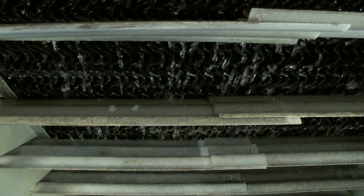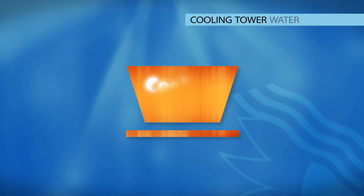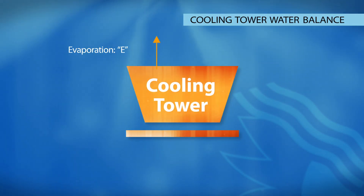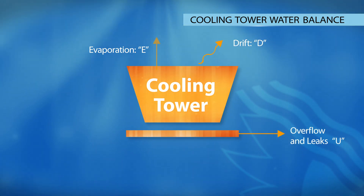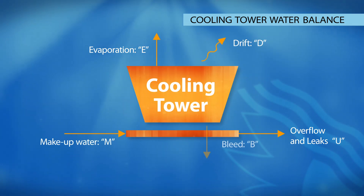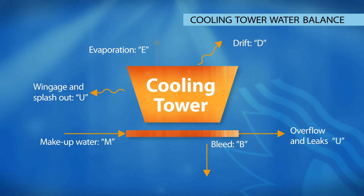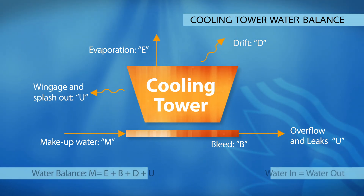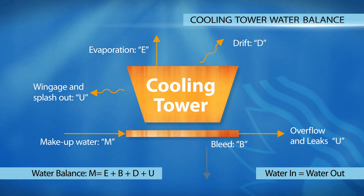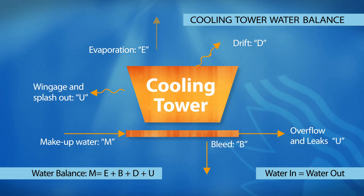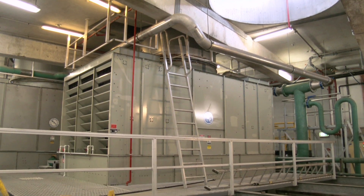To optimise the water efficiency of any cooling tower, the entire water balance must be considered. Water losses can occur from a number of sources, including evaporation, drift, overflow, leaks, and bleed. While some losses such as evaporation are necessary for the correct and safe operation of the system, all sources can cause significant water losses if left uncontrolled.